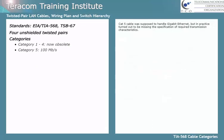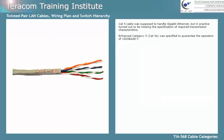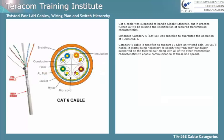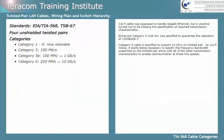Category 5 cable was supposed to handle Gigabit Ethernet, but in practice turned out to be missing the specification of required transmission characteristics. Enhanced Category 5, also known as Cat5e, was specified to guarantee the operation of 1000BaseT. Category 6 cable is specified to support 10 Gbps on twisted pair — it becomes necessary to specify the frequency bandwidth supported, along with all other transmission characteristics to enable communications at these line speeds. In theory, Category 7 supports 100 Gbps on twisted pair.